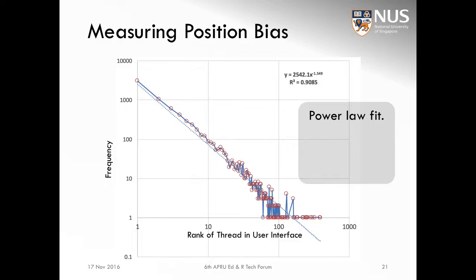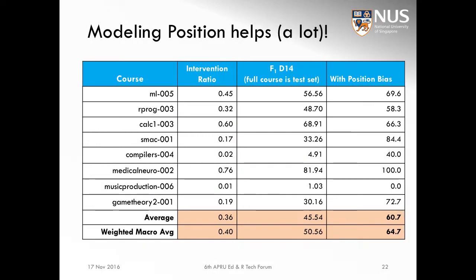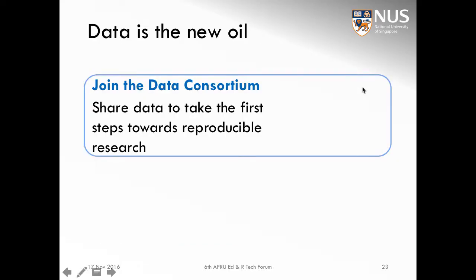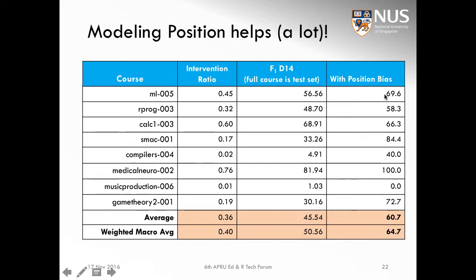There is a power law — more specifically a logistic log power fit. When we are able to measure this position bias, we can model it too by adding the position bias feature into our classifier. With this position bias feature, we see a larger amount of prediction accuracy, with over a 13% improvement in F-measure. This opens the possibility of predicting threads that are missed specifically because they did not show up on the first page of an instructor's user interface in a MOOC, and then correcting that.